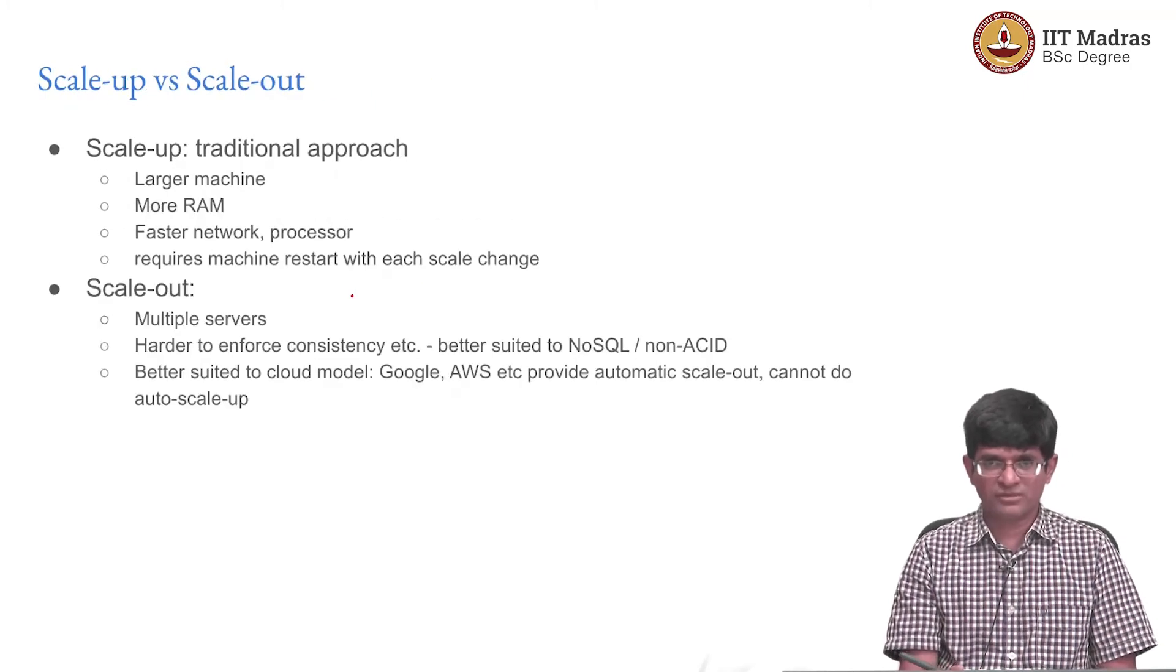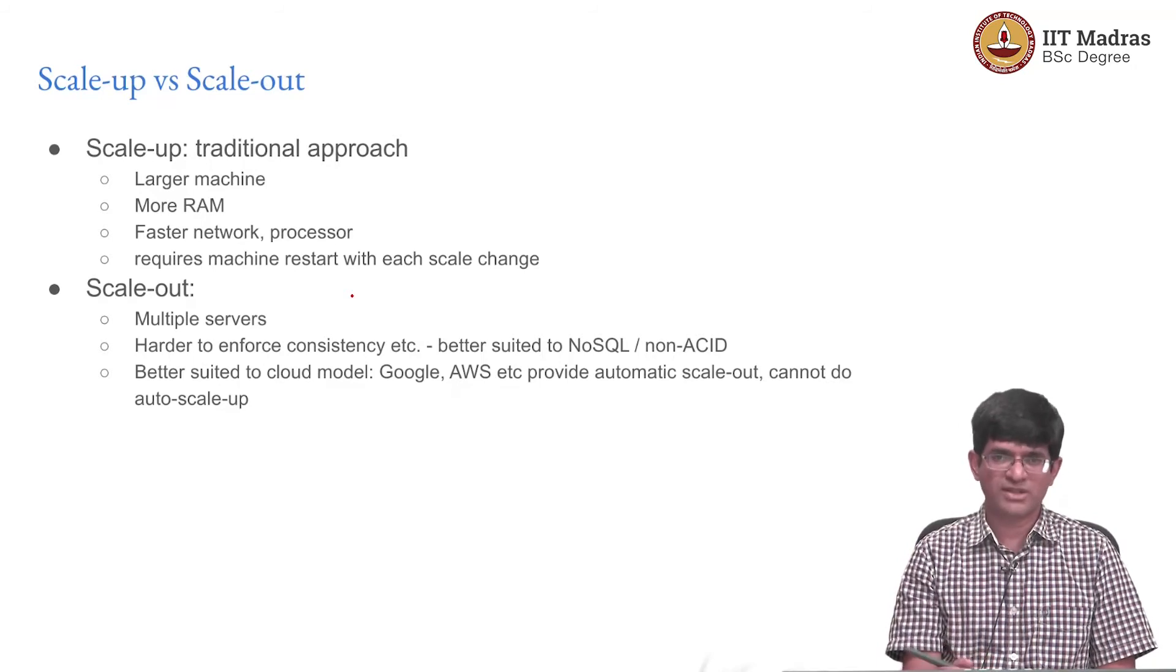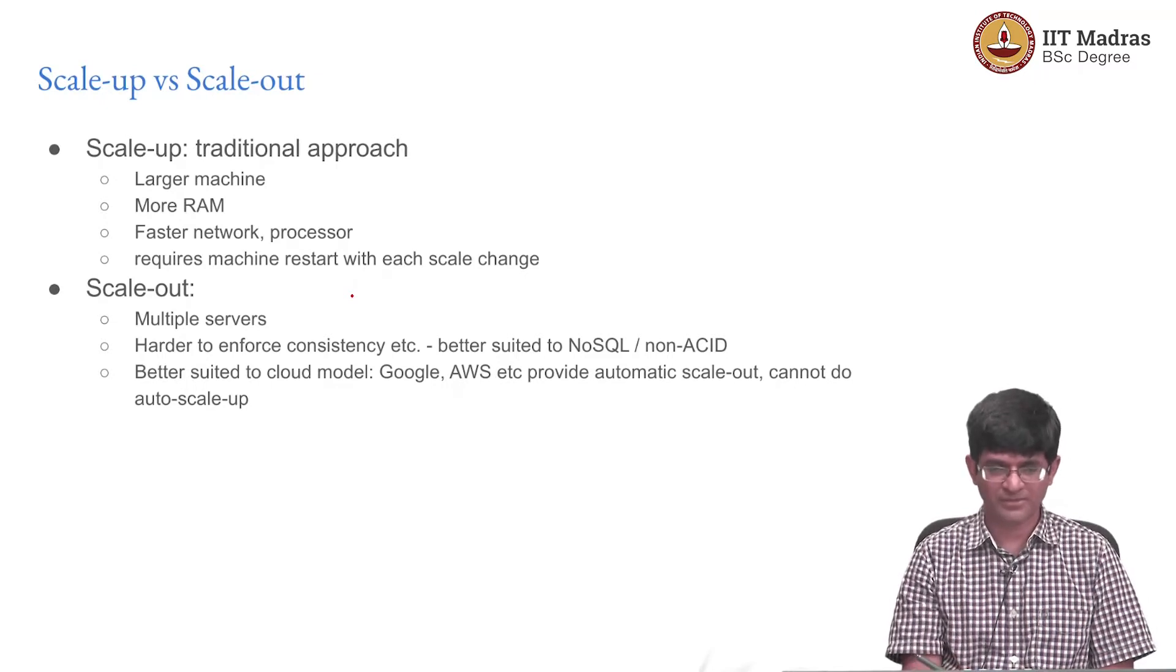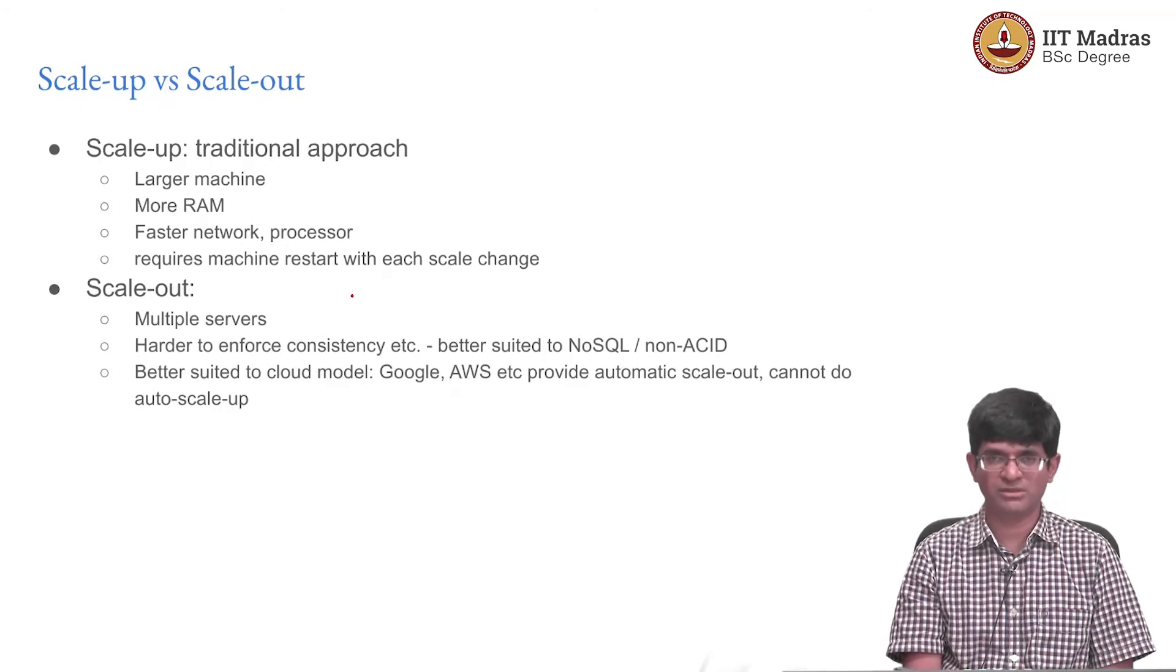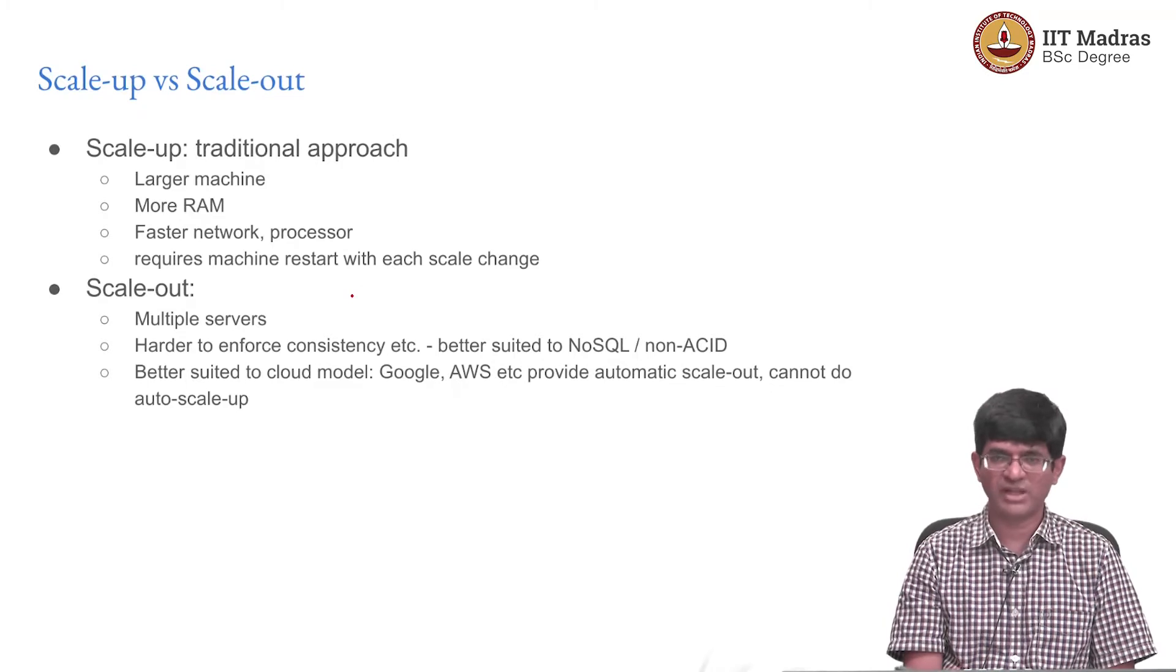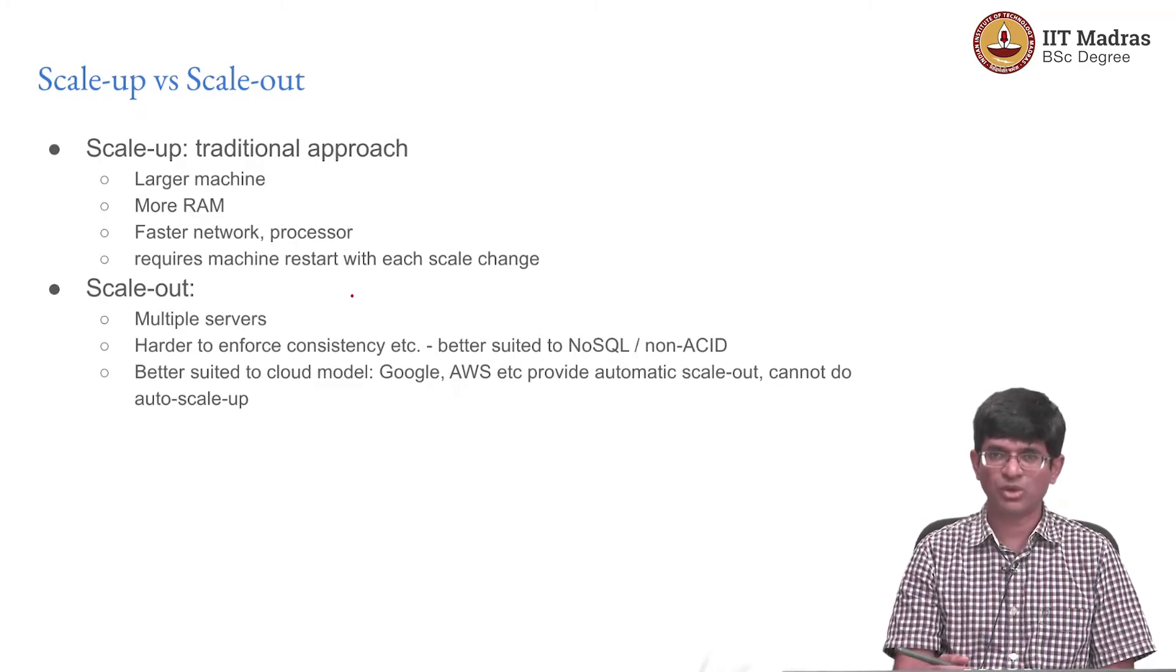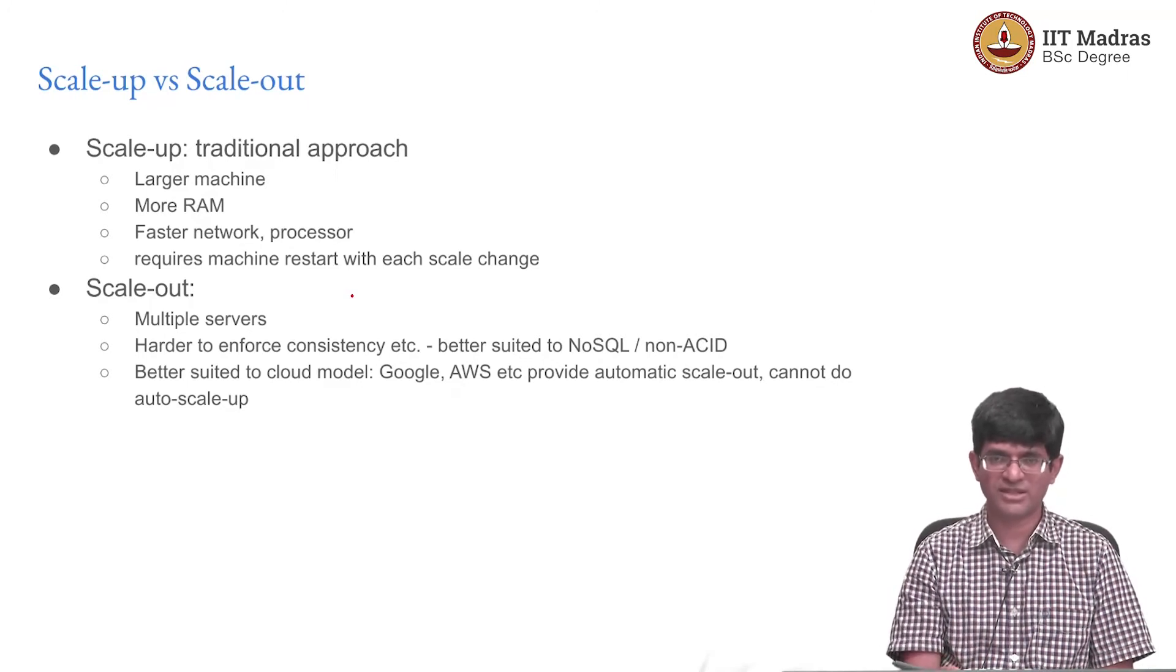This leads us to two different notions of how you can scale when your application becomes bigger. The traditional approach is to use something called scale-up, and this is what Oracle, for example, excels at. You use larger machines with more RAM, faster networks, faster processors. But every time you want to upscale—when you're running out of memory—you pretty much have to restart the system.